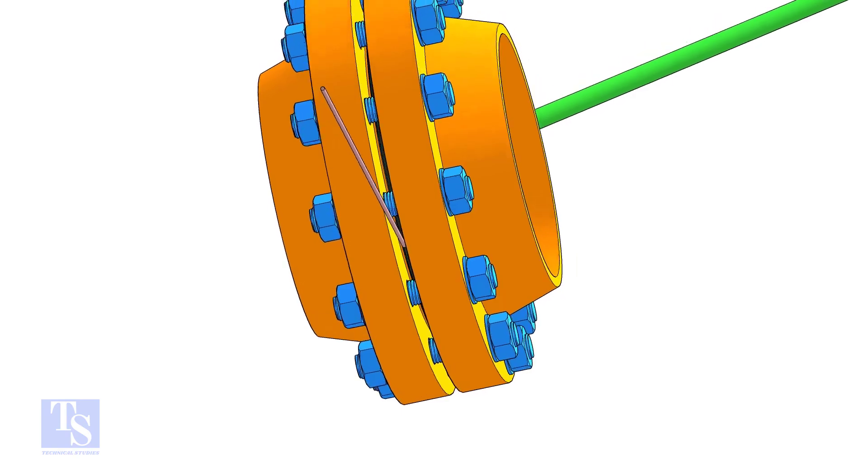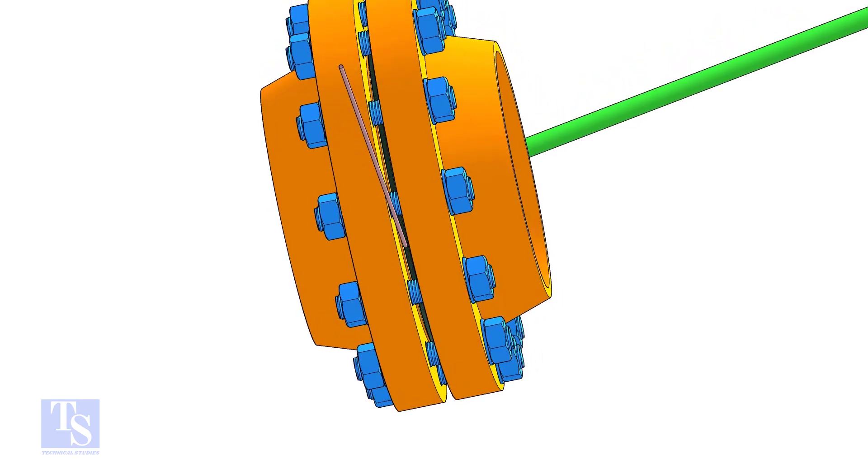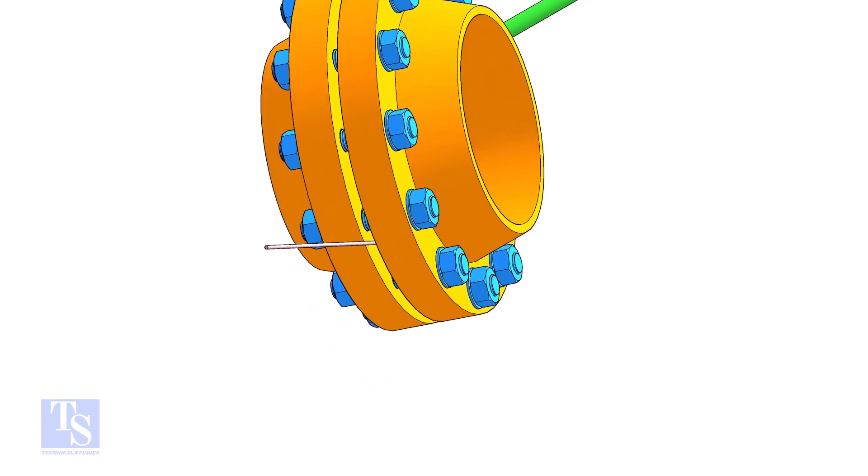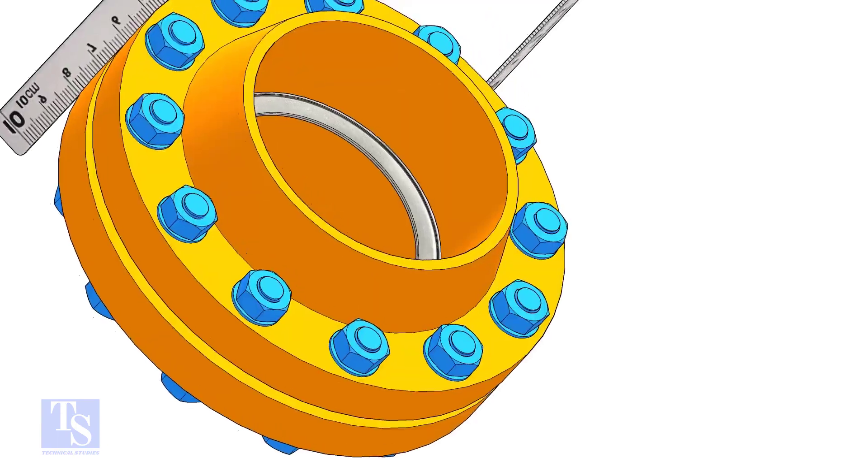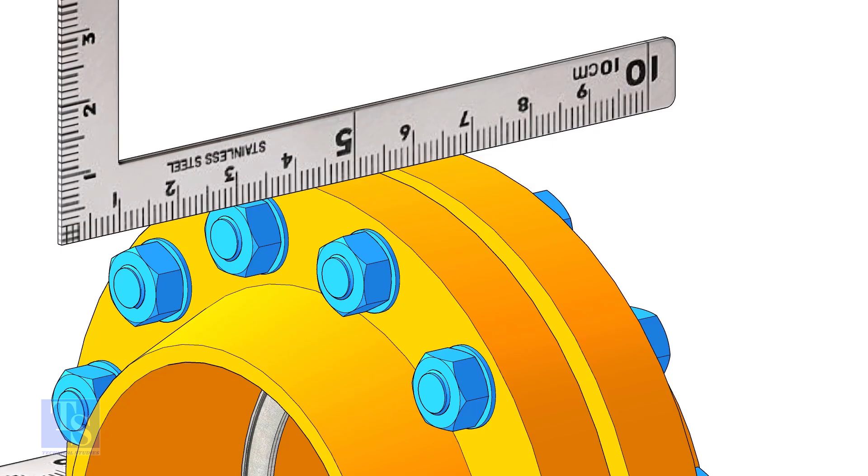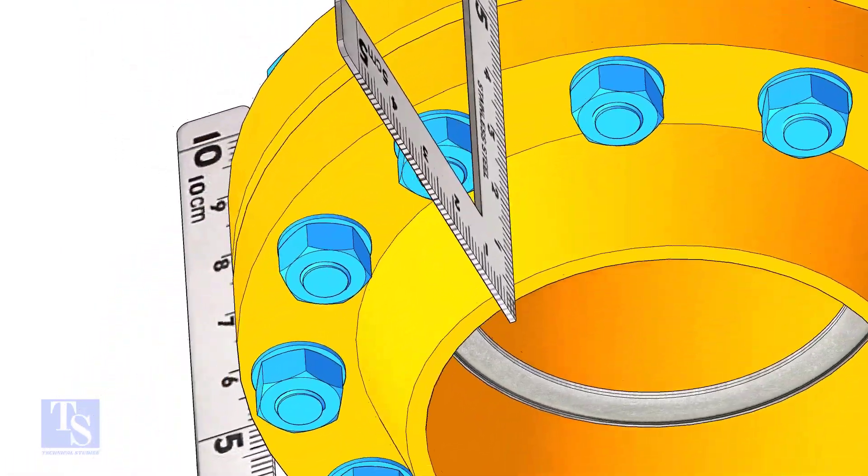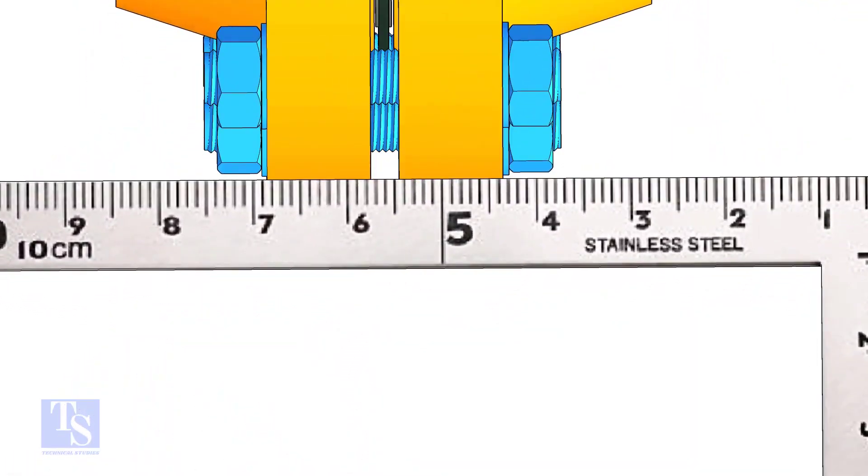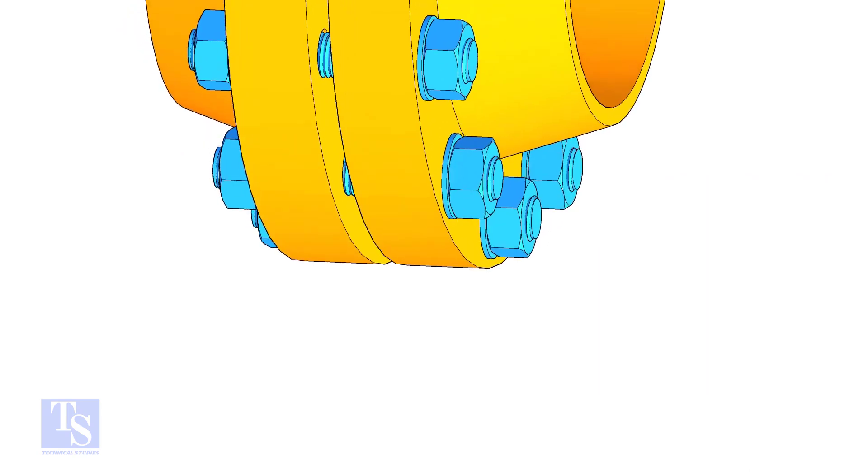Now tighten the bolts, only enough to hold the gasket in its correct location. Check the flange overlap minimum at four quarters, in case there is an overlap. Distribute equally to all sides.